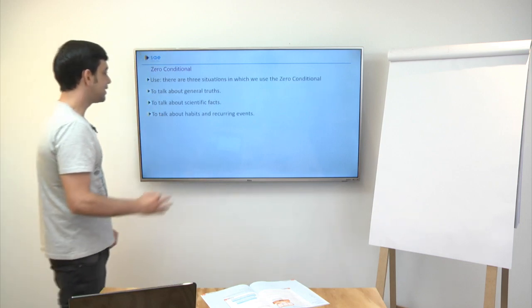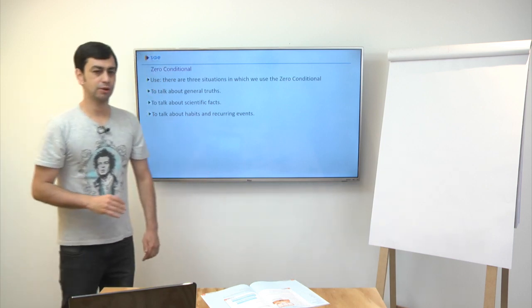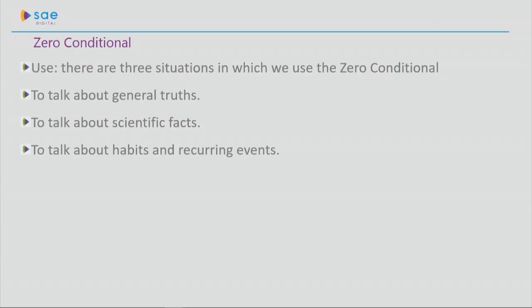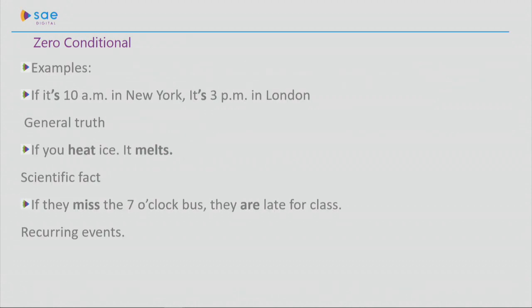In what situations will I use it? There are three different situations where I use zero conditional. To talk about general truths, to talk about scientific facts, and also to talk about habits and recurring events that always happen. So let's have a look here at some examples. If it's 10 a.m. in New York, it's 3 p.m. in London. What is this? General truth. Something that will always be true. Every time, if it's 10 a.m. in New York, it will be 3 p.m. in London. If you heat ice, it melts.